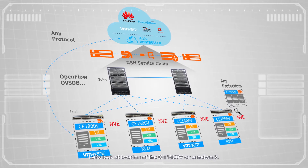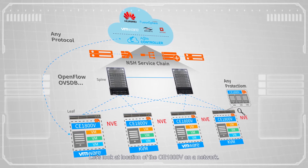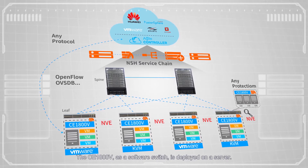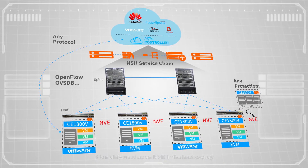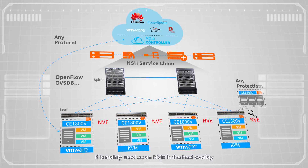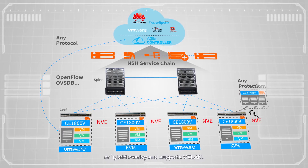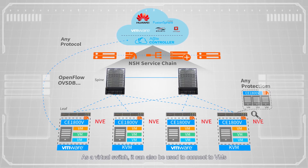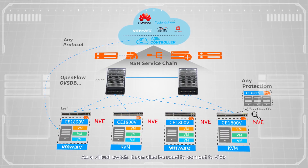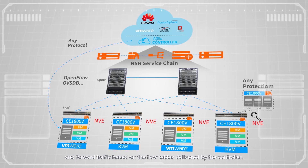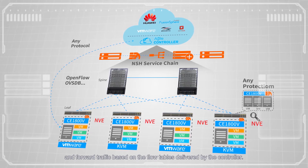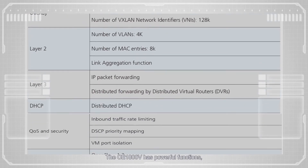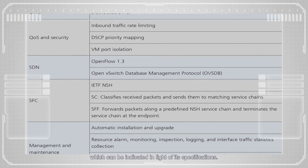Let's look at the location of the CE1800v on a network. The CE1800v, as a software switch, is deployed on a server. It is mainly used as an NVE in the host overlay or hybrid overlay and supports VXLAN. As a virtual switch, it can also be used to connect to VMs and forward traffic based on the flow tables delivered by the controller.